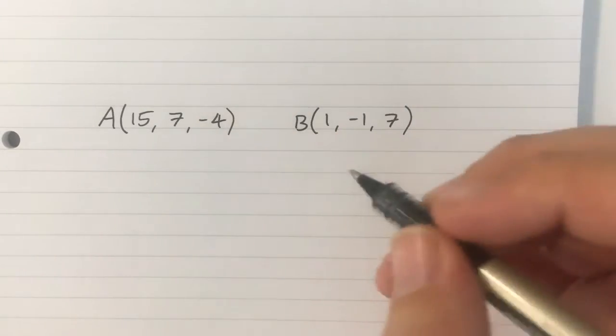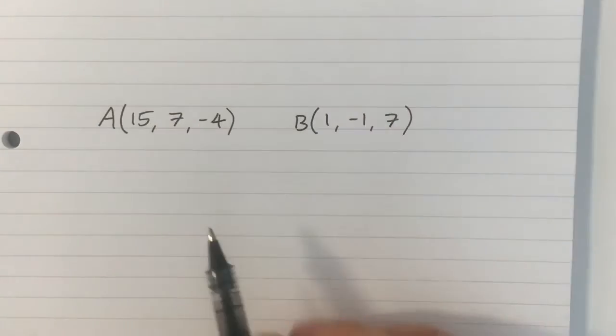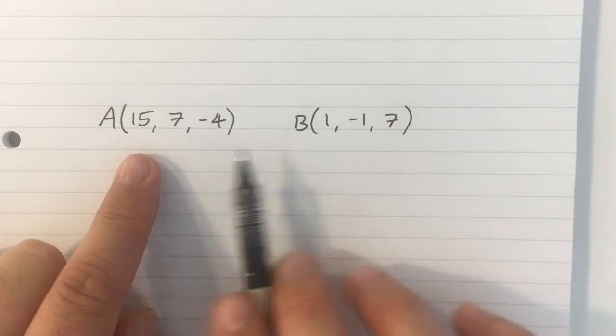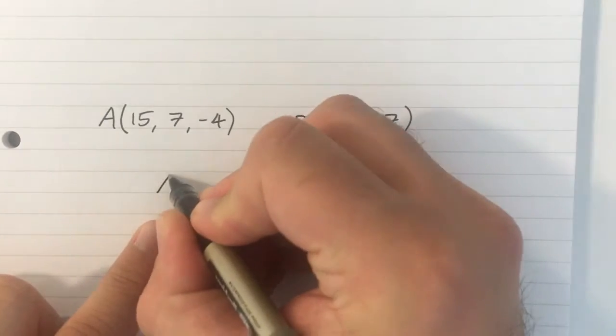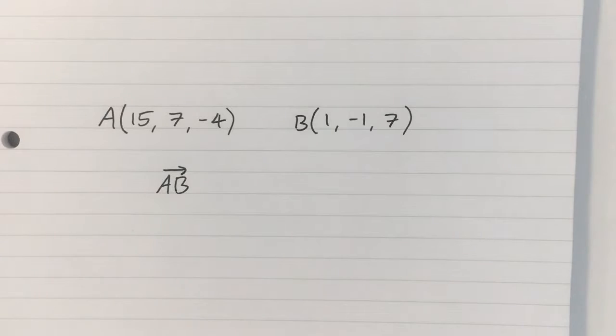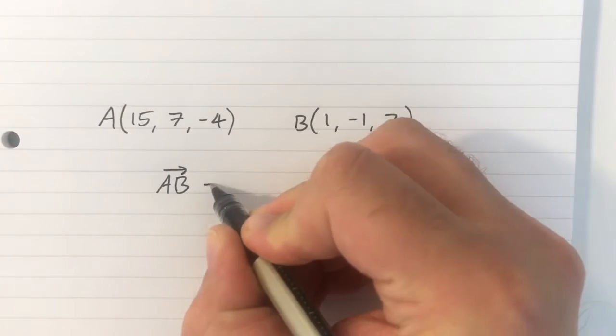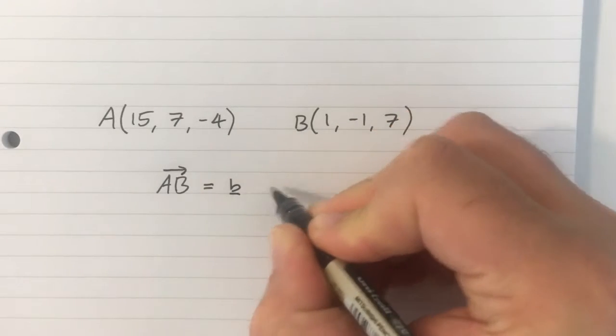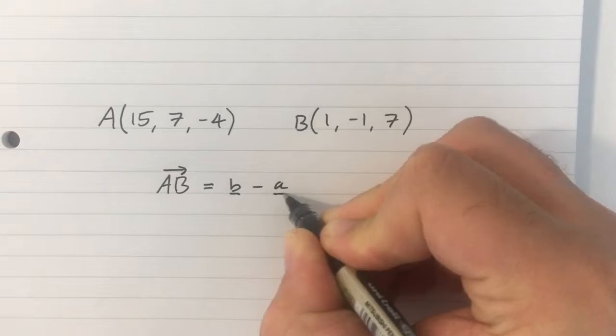So, first things first, we need to find the direction of the line. Now, the direction of the line, because these two points both lie on the line, then we know that the vector from A to B must be in the direction of the line, because both points lie on the line. Now, you know from year one that the vector from A to B is equal to the position vector of B minus the position vector of A.